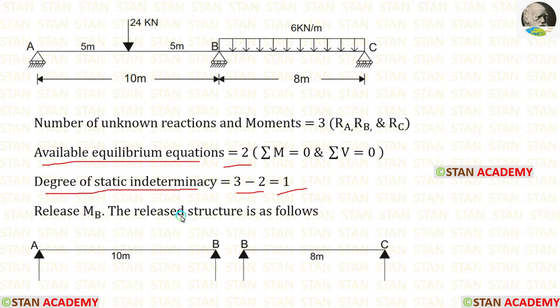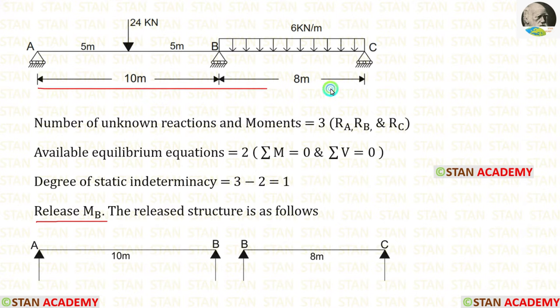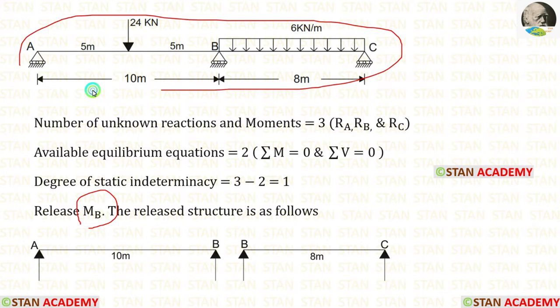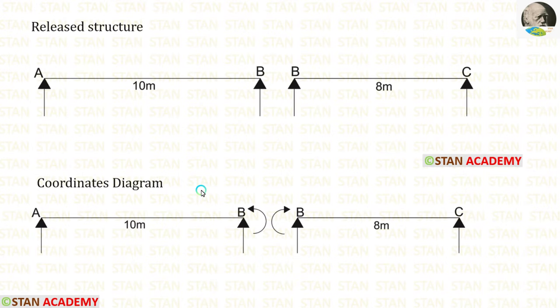Now we have to make this beam statically determinate. Let us remove MB. When we remove MB, this beam will be split into two simply supported beams. By removing MB, we have made this statically indeterminate structure into a statically determinate structure. This is called the released structure.